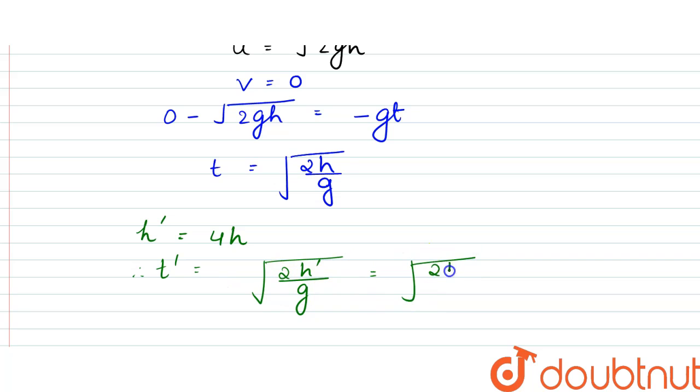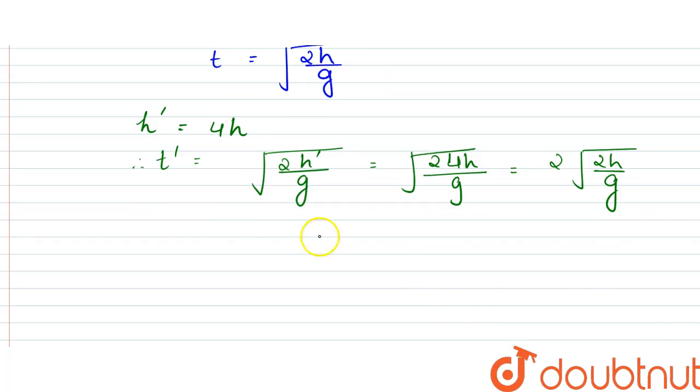(2h/g). Since √(2h/g) is t, it will be 2 times t, that is t'.